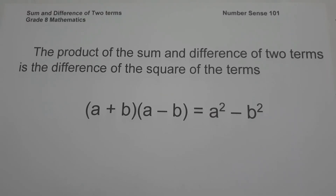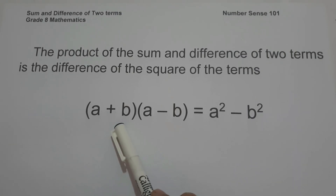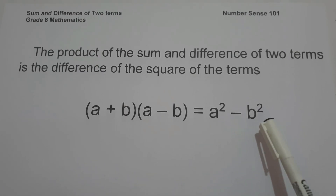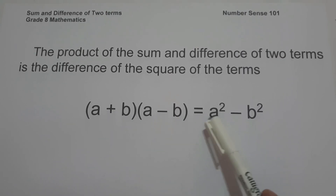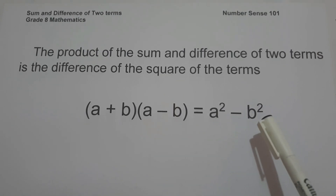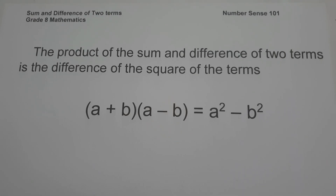In today's video we are going to have a basic introduction on how to find the sum and difference of two terms, starting with simple to complex examples explained in detail. The product of the sum and difference of two terms is simply the difference of the squares of the terms. In symbols: quantity a plus b times quantity a minus b equals a squared minus b squared. Simply multiply first term to first term and last term to last term. Remember, the product of the sum and difference of two terms is always a binomial — a polynomial with exactly two terms.